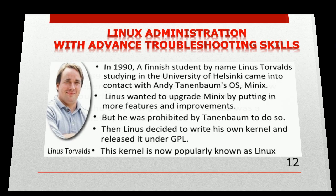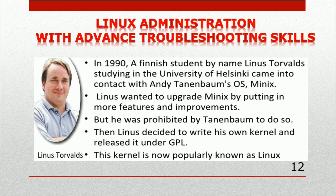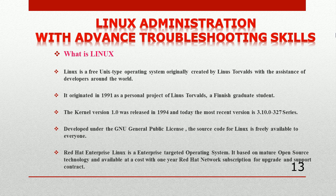The only thing GNU lacked was a complete free OS. In 1990, a Finnish student named Linus Torvalds, studying at the University of Helsinki, came into contact with Andy Tanenbaum's OS, Minix. Linus wanted to upgrade Minix by adding more features and improvements, but Tanenbaum was not willing to allow that. So Linus decided to write his own kernel and release it under GPL — this kernel became properly known as Linux.